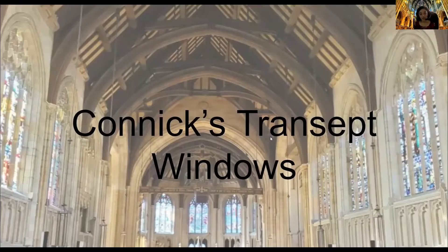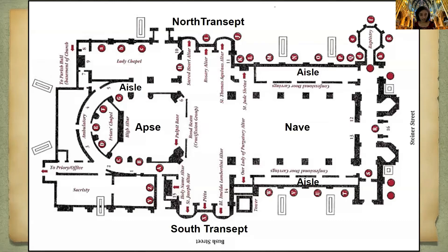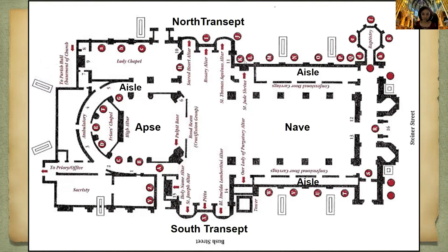Today we're going to talk about the conic windows in the transept. Just to re-outline what the floor plan looks like: we have the apse, and in my previous two videos — one by myself and one with Lydia — we talked about the windows up here in the apse. Today we're going to be talking about the smaller windows in the north and south transepts, specifically ones above the holy name altar, ones in the H section, and ones around the K section.